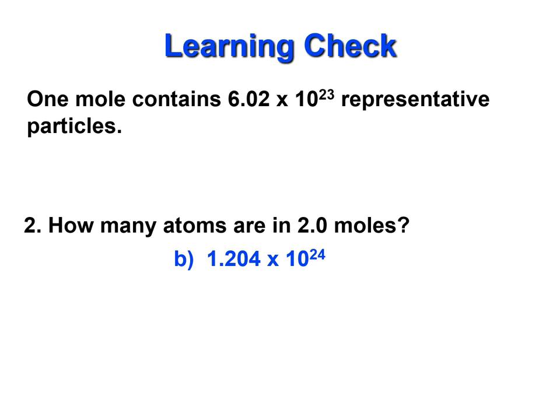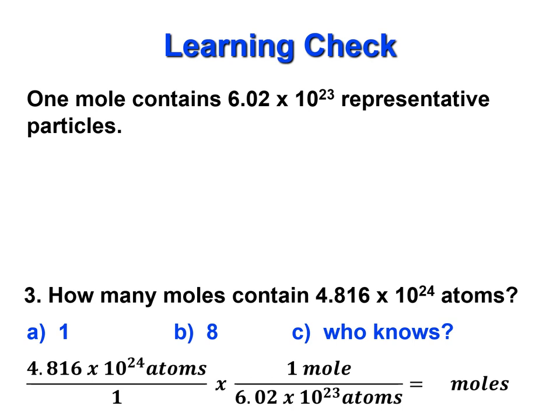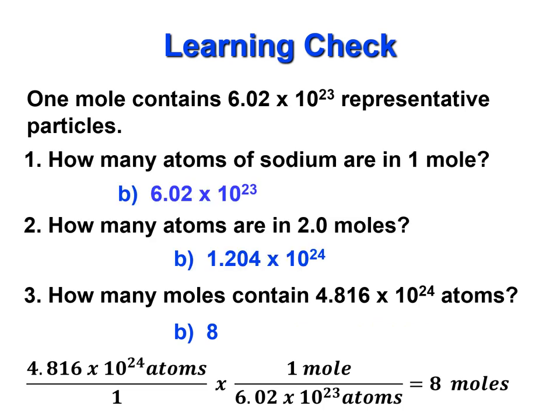Now let's do the reverse problem: how many moles contain 4.816 times 10 to the 24th atoms? You set this up as a conversion problem. Write what you have on the left — 4.816 times 10 to the 24th atoms as a numerator over one — then multiply by the conversion factor: 1 mole over Avogadro's number of atoms. The atoms on top and bottom cancel, and if you're careful to put 6.02 times 10 to the 23rd in parentheses when you divide, you get 8 moles of atoms.